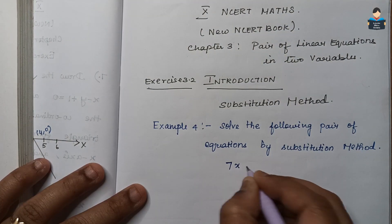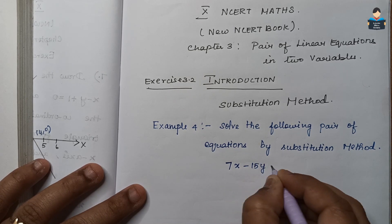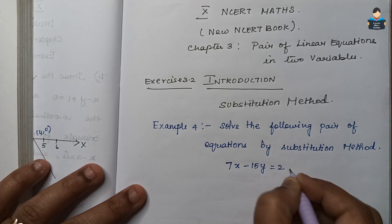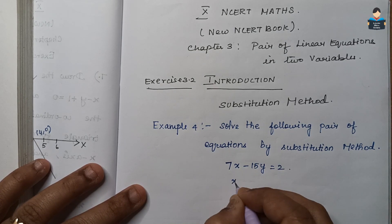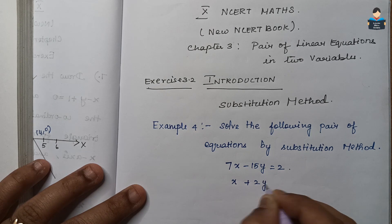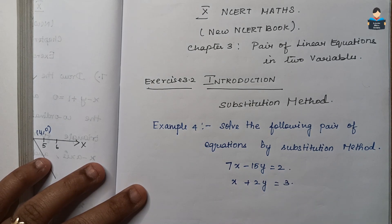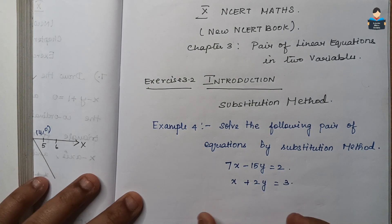So the two equations are: 7x minus 15y is equal to 2, and x plus 2y is equal to 3. We will solve these using the substitution method.